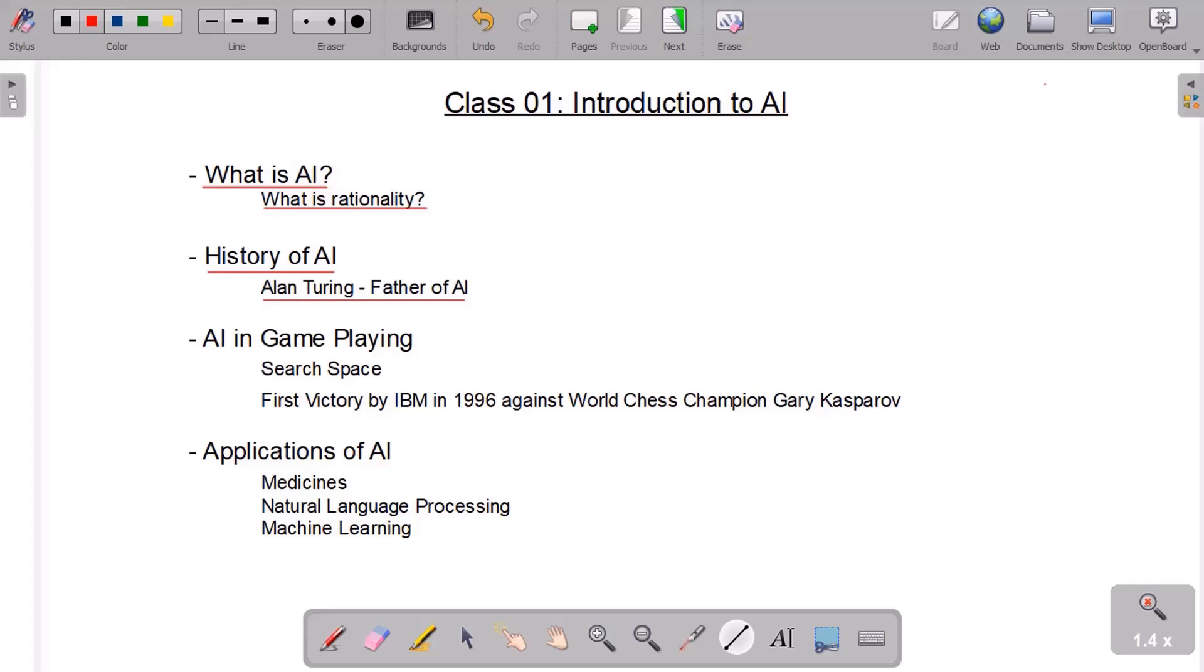The most challenging work, according to the AI researchers and scientists, was to train machines in game playing. So they started using AI in the field of game playing. Here you can see a word search space. The question must be popping in your mind that what is search space. So simply you can say that search space is the space that gives you multiple paths or choices from your current state to your goal state. Let's check it with an example.